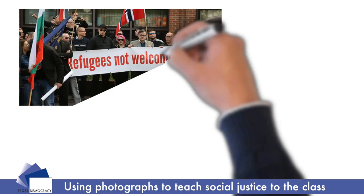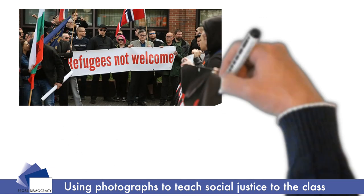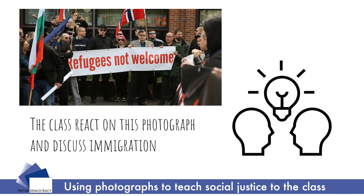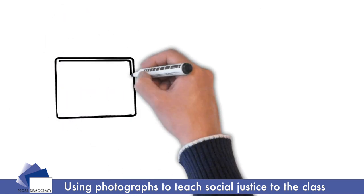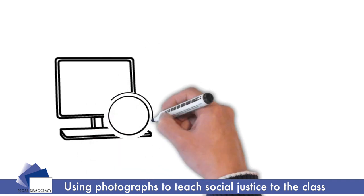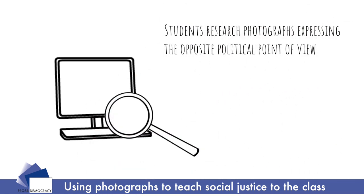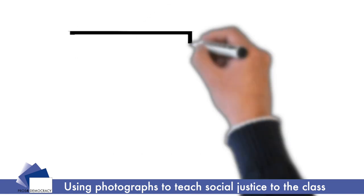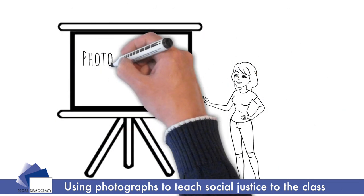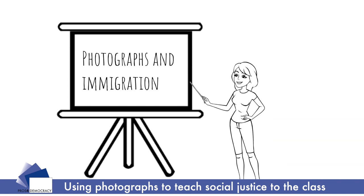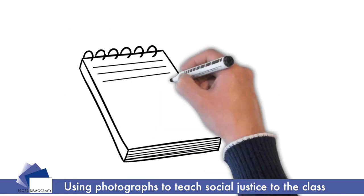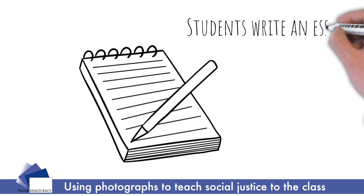Presenting the picture available in the complete activity description, the class reacts about immigration. Then each group searches for photographs that express this photo's opposite political point of view. The students make a presentation showing how these photos show support for immigration. Then each group prepares an essay from one of the photos found.